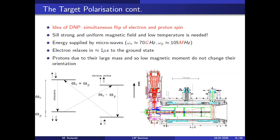Instead, we use dynamic nuclear polarization (DNP). The idea is to flip the spin of both the proton and electron simultaneously. Because the electron is very light and fast, it quickly relaxes back to the ground state, while the proton, being heavy, retains the polarization. You need a very precise microwave frequency and a very homogeneous magnetic field — to 10^-4 — to make this happen.